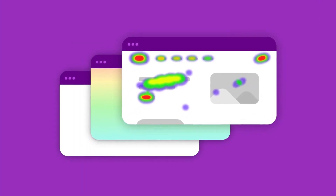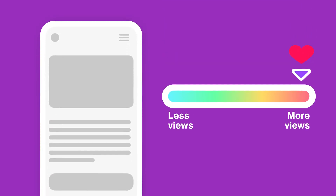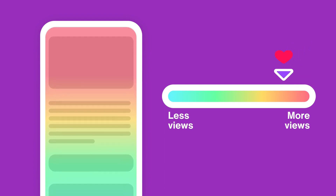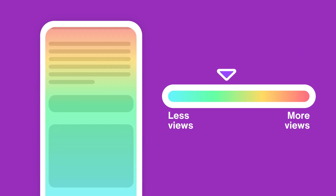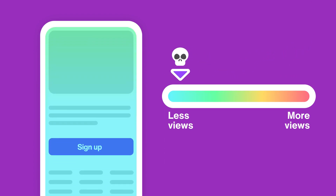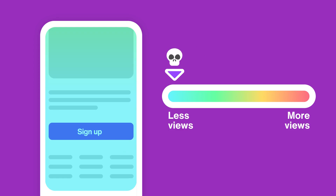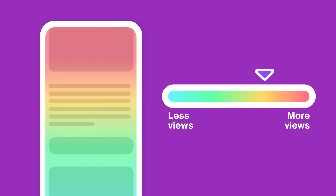There are a bunch of different types of heat maps. For example, scroll maps allow you to see how far users are moving down the page. As we scroll down here, we can see that viewers are dropping off at a certain point. And now that we know this, we can investigate.